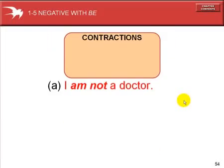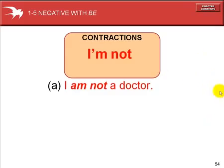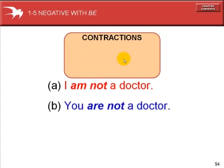Now we're using the negative. I am not. I am not a doctor. We can also use the contraction: I'm. The apostrophe takes the place of the letter A. I am not is the same as I'm not.